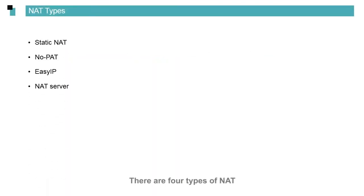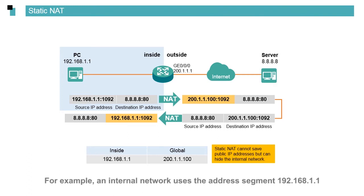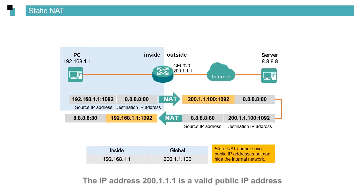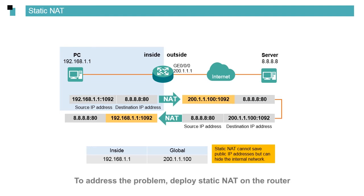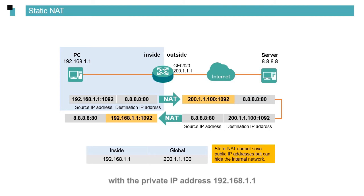There are four types of NAT. The first NAT type is static NAT. For example, an internal network uses the address segment 192.168.1.1. A router functions as the gateway of the PC and is connected to the public network. The IP address 200.1.1.1 is a valid public IP address. Private IP addresses cannot access the public network node 8.8.8.8. To address this, deploy static NAT on the router — first, apply for a valid public IP address, for example 200.1.1.100.